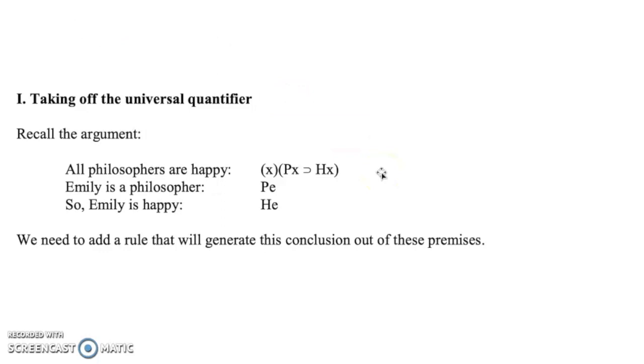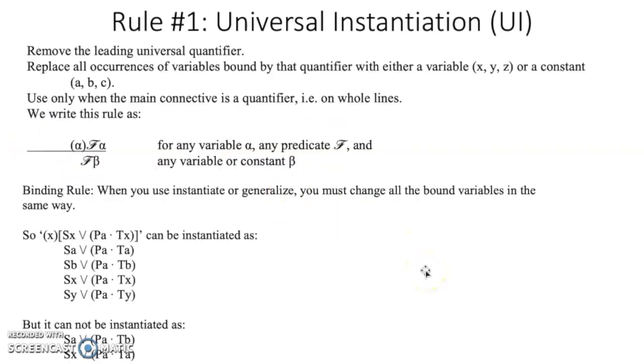So let's get ready for the first rule: taking off the universal quantifier. So this is an argument that I used in the notes previous. All philosophers are happy. Emily is a philosopher. So Emily is happy. Now traditionally we know this is an accurate and logical argument. We know it's valid because, well, we know modus ponens. However, we can't prove it with the rules we have right now. We need to have a way to get rid of this X and turn it into a constant, and then we can do our proof like we normally do.